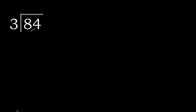84 divided by 3. 8 is not less than 3, therefore 3 multiplied by which number is nearest to 8 but not greater. 3 multiplied by 3 is 9, and 9 is greater. 3 multiplied by 2 is 6. 8 minus 6 is 2.